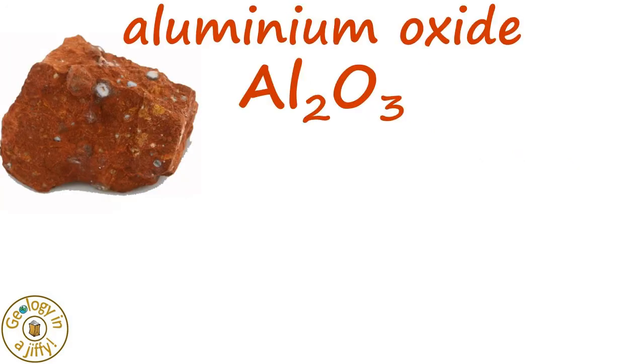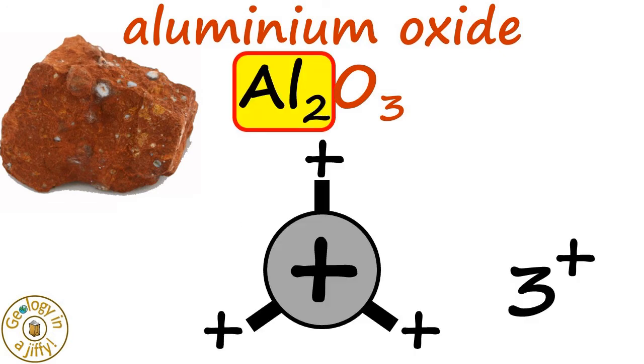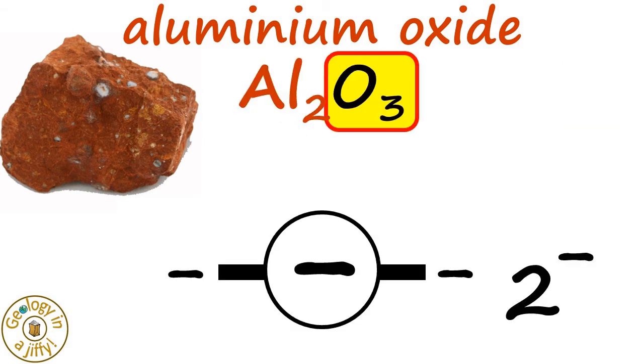In aluminium oxide, the aluminium ions have a 3+ charge and there are two of them, and the oxide ions have a 2- charge and there are three of them.